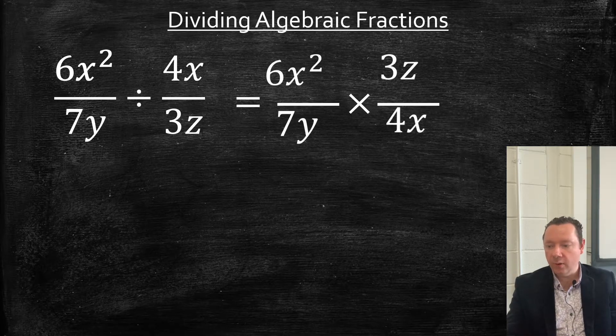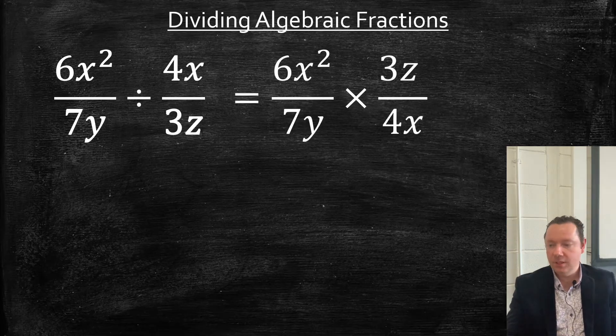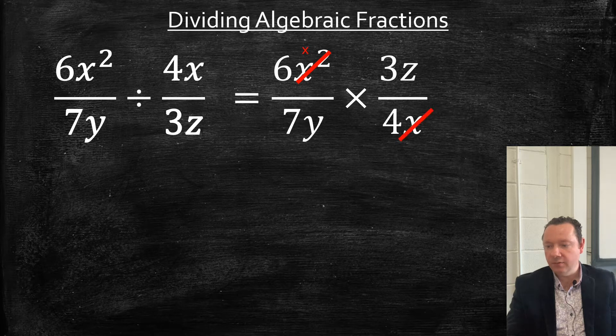And now we just do the question as normal, times it. So we can simplify in advance. So we can take an x here. Dividing by x, we get x. Divide the other x, it goes.